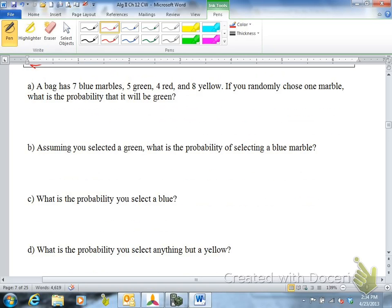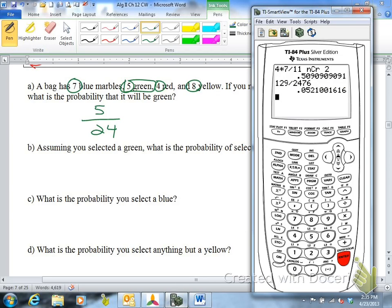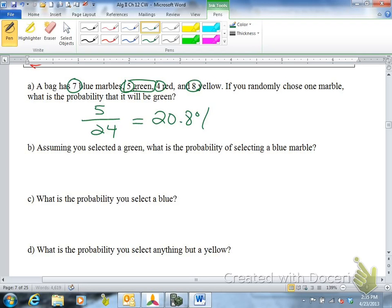So on this first question, marbles. The SAT and standardized tests like to ask questions about marbles for some reason. A marble is like a small glass ball. So you have seven blue marbles, five green, four red, eight yellow. If you randomly chose one marble, what is the probability it will be green? So you want your number of ways to succeed is five, out of your total, which is 24 total. If you write it as a percentage, you would write it as 20.8%.